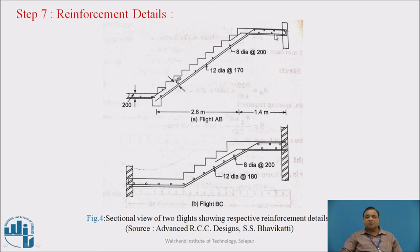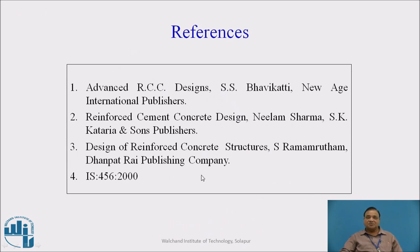Distribution steel in the portion where we have top and bottom steel is provided in a staggered manner. Next is flight BC. For flight BC we have landing at both ends and in between a going portion. Here we get 12mm diameter bars at the bottom as main steel at 180mm center to center. Here it is 170, here it is 180mm center to center. This is taken up to the top with extra bars at bottom. Distribution steel is staggered, and here distribution steel is 8mm at 200mm center to center. This is how we show the two sections in case of open well staircase: one for the two flights on either side and one for the central flight.